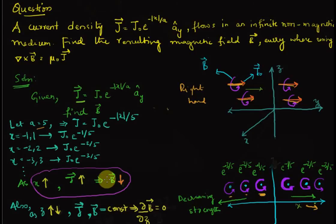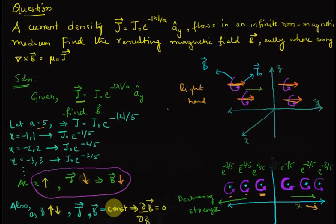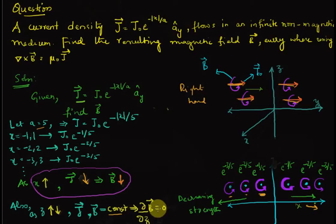To summarize: as x increases, the current density decreases and so the magnetic flux density also decreases. Also, as z increases or decreases, neither J nor B has any change — it is constant. Therefore, the partial derivative dB/dz equals zero, meaning the magnetic flux density does not vary along the z direction.